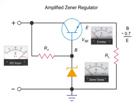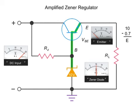Thus, if we change the Zener diode value to 10, then the voltage at the transistor base is 10 volts. After passing through the transistor, the voltage drops to 9.3 volts, resulting in a 9.3 volt load at the RL resistor.